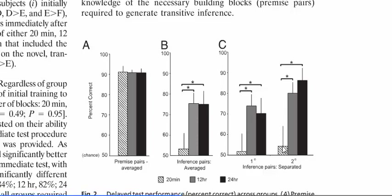Here in section C of Figure 2, they've divided out the inference pairs according to whether they're one degree or two degrees separated. A one-degree inference is A versus C — where the premise pairs would be A versus B and B versus C. A two-degree inference is A versus D — so you've got to combine your knowledge from premise pairs: A is better than B, B is better than C, and C is better than D, to come to the correct inference at two degrees of separation.